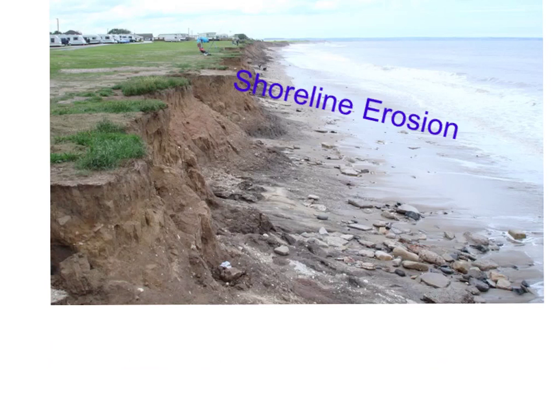Shorelines were formed by water erosion. Whenever the waves hit the wall of rock, it chips off tiny pieces of the rock until it gets smaller and smaller. And that's how shoreline erosion forms.